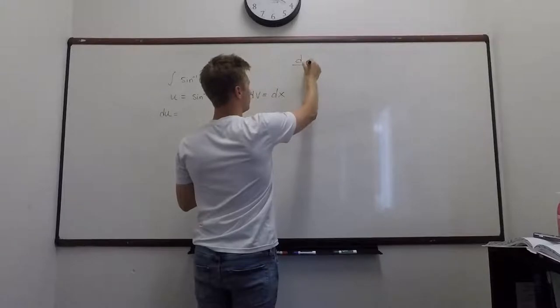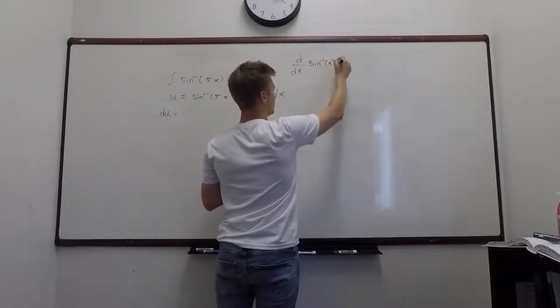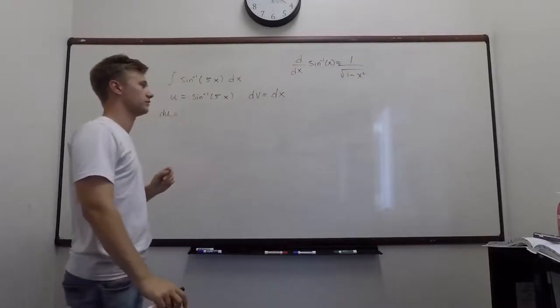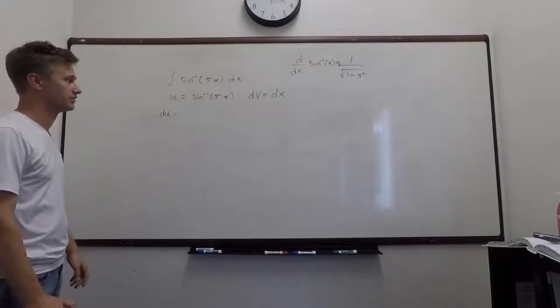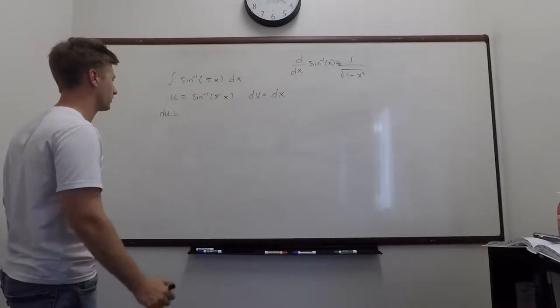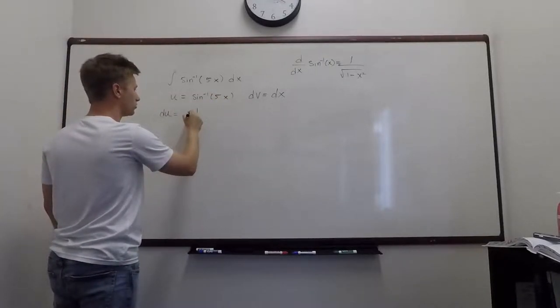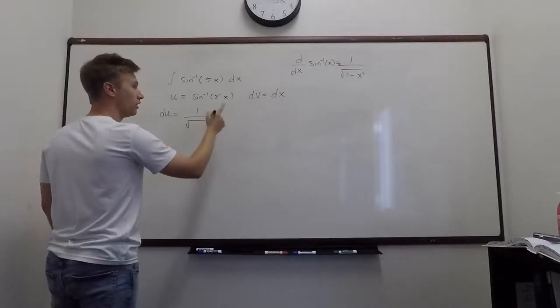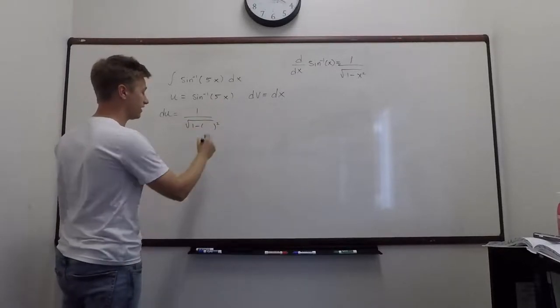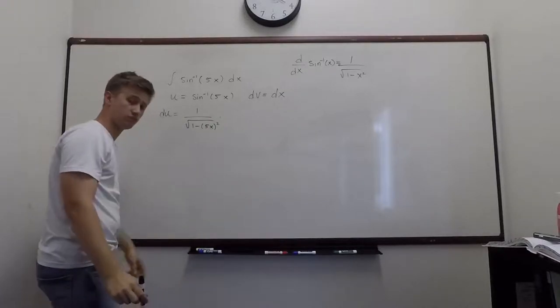Well, the derivative of inverse sine of x is 1 over the square root of 1 minus x squared. Okay, so that you have to memorize. So now we have 5x, so we'll just use the chain rule. Okay, so the derivative of inverse sine of anything is always 1 over square root 1 minus that thing squared.